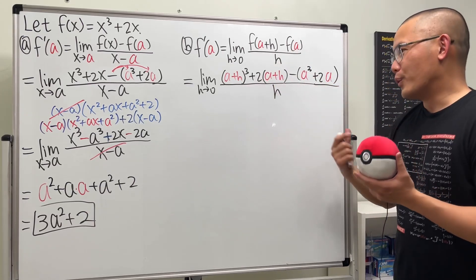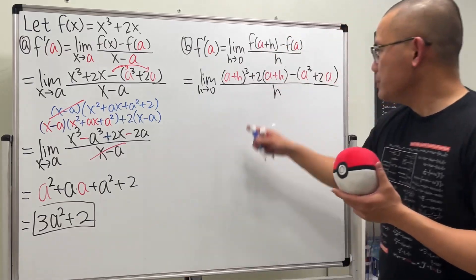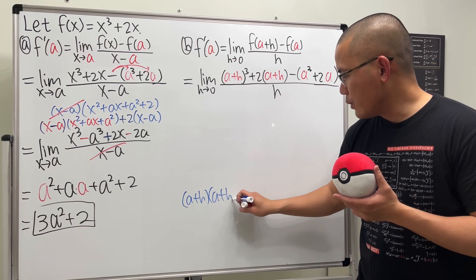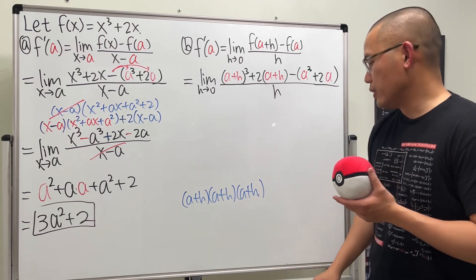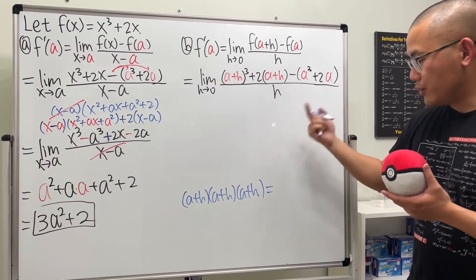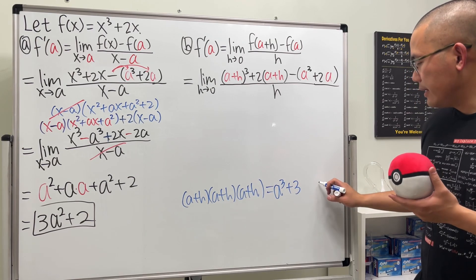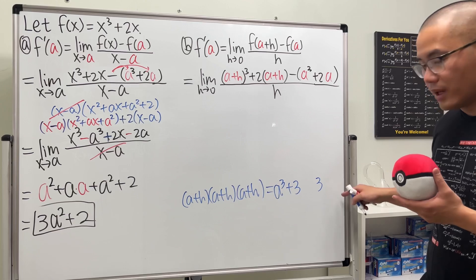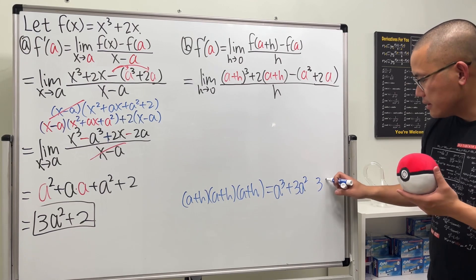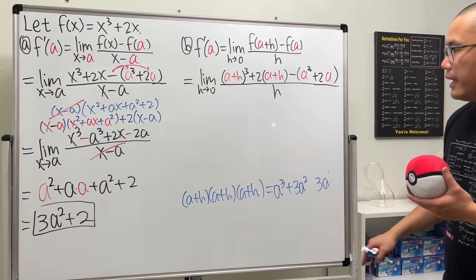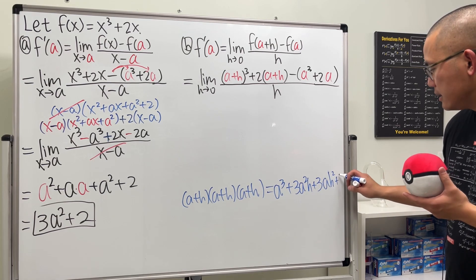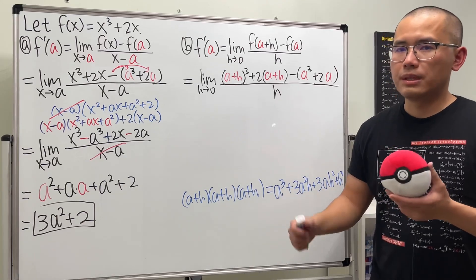This is where it gets harder — we have to expand (a + h)³. Let me show you using Pascal's triangle. Write (a + h) three times and expand. The coefficients from the triangle are 1, 3, 3, 1. The powers of a decrease from a³ down to a⁰, and the powers of h increase from h⁰ up to h³. So the expansion is: a³ + 3a²h + 3ah² + h³.